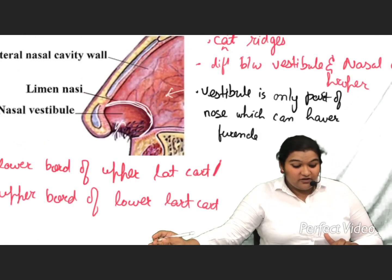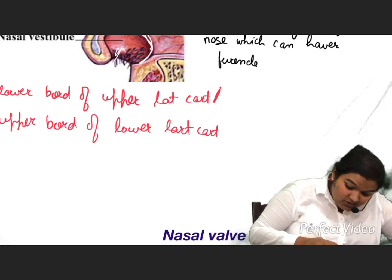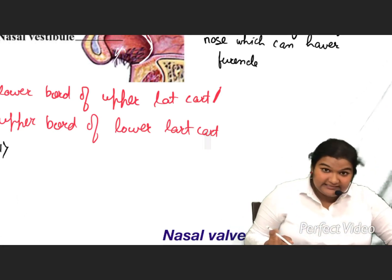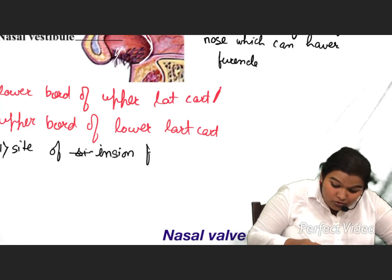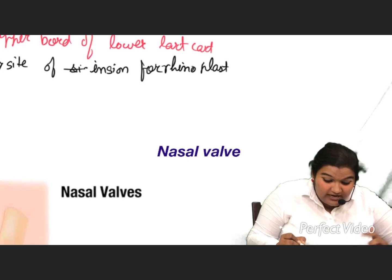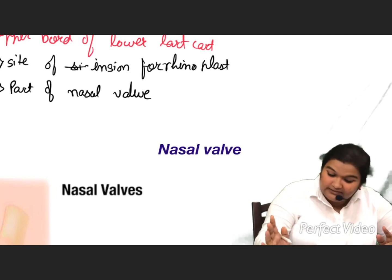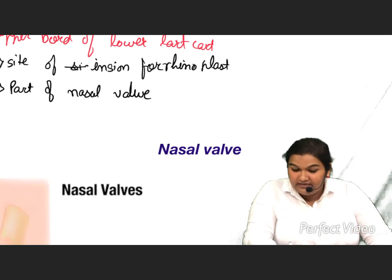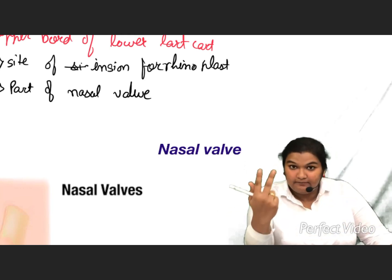So we are done with the limen nasi definition. Now, what is the significance of the limen nasi? First, the limen nasi is a site of incision for rhinoplasty. And also, it forms part of the nasal valve. It is a site for the incision in rhinoplasty and a part of the nasal valve.